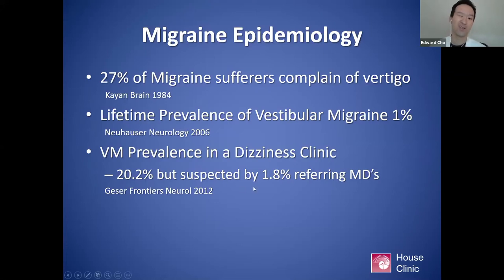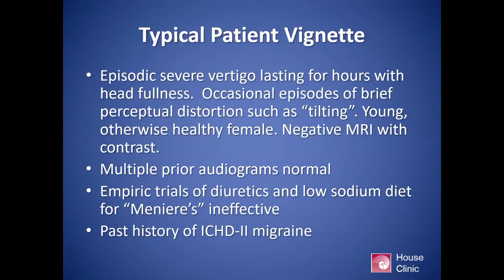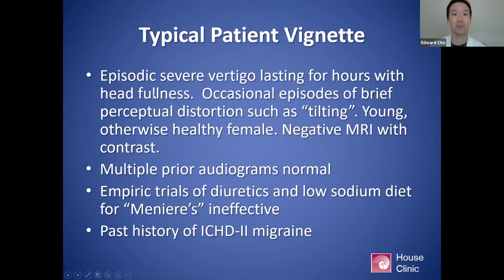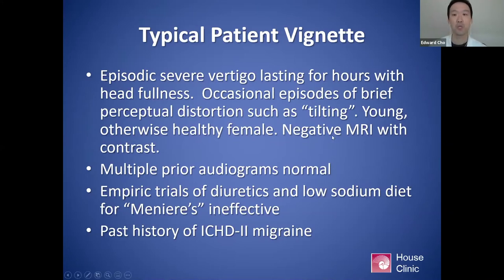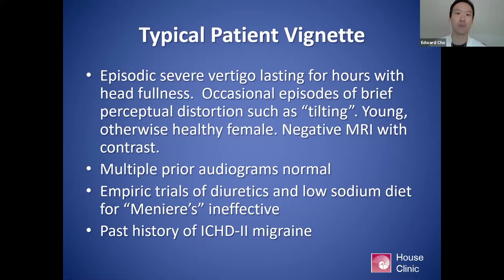That percentage has increased as awareness of vestibular migraine has grown, but it is still a very underdiagnosed condition. The typical patient vignette would be somebody who has episodic severe vertigo lasting for hours with head fullness, possible sensory distortions such as tilting — an otherwise healthy young woman. There is a clear hormonal contribution with migraines in general, and usually normal testing — normal MRIs and audiograms. Many of these patients are diagnosed with Meniere's disease, but those treatments can be ineffective. If someone has a past history of migraine headaches, they would at least fit into the category of probable vestibular migraine.